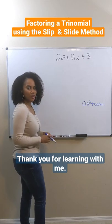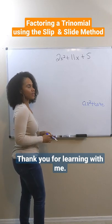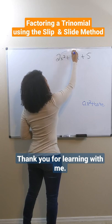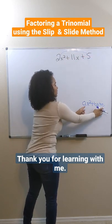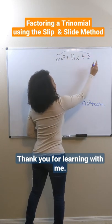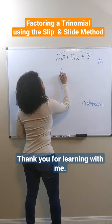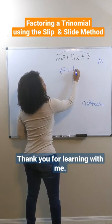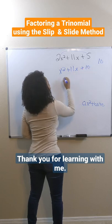I'm going to factor this trinomial using the slip and slide method. First thing I want to do, I want to slip A over to C. This is A and this is C. So I multiply them to make 10. Rewrite my new trinomial — I get 10.